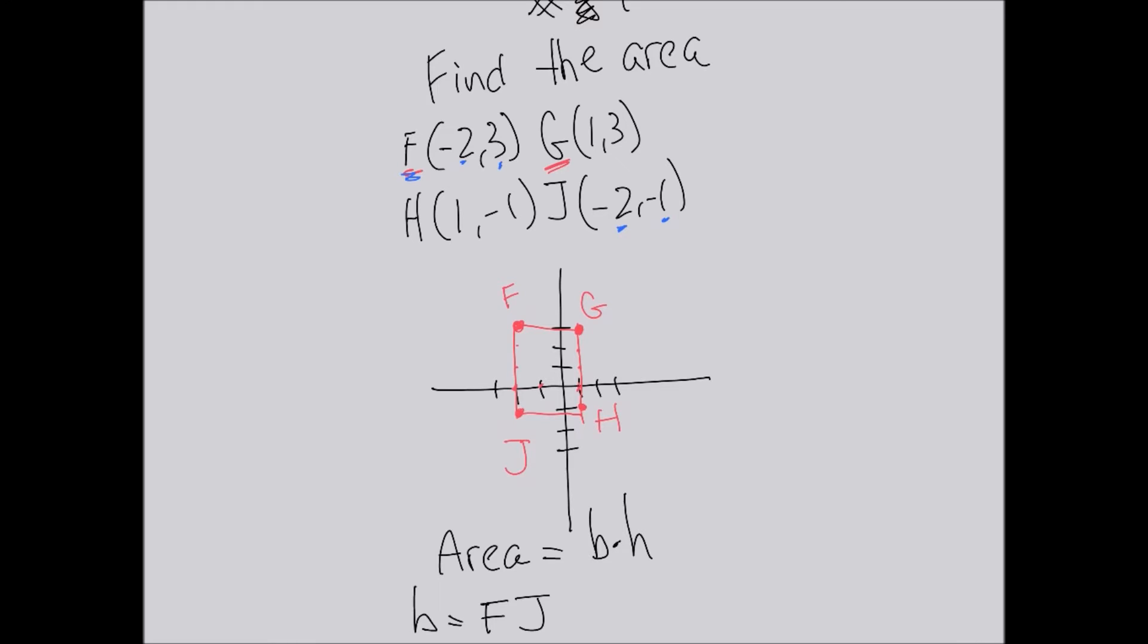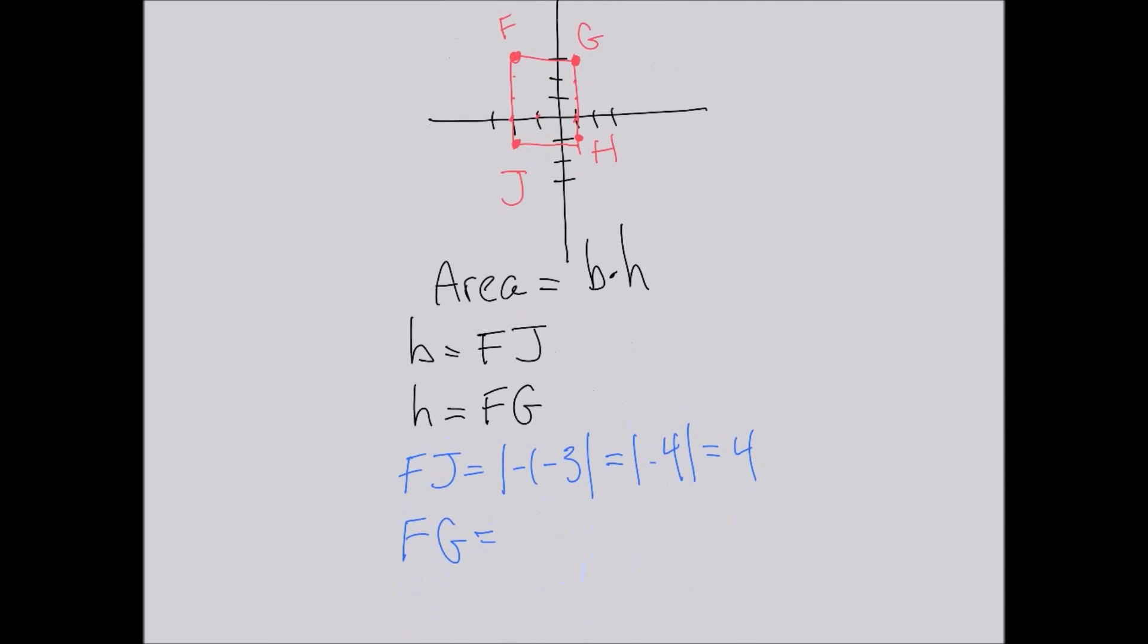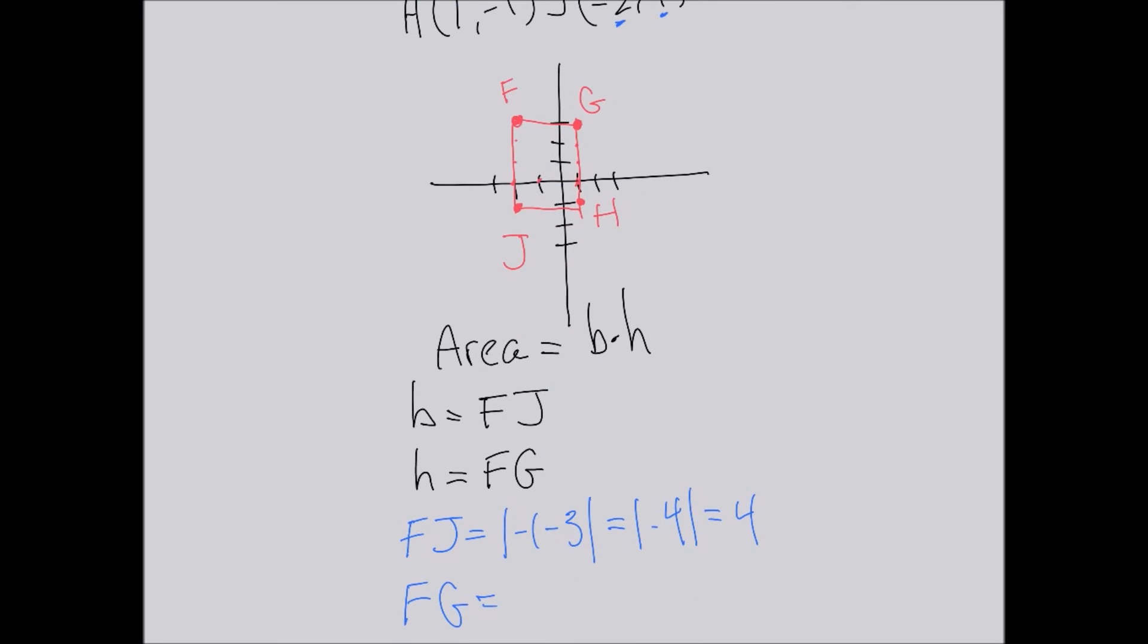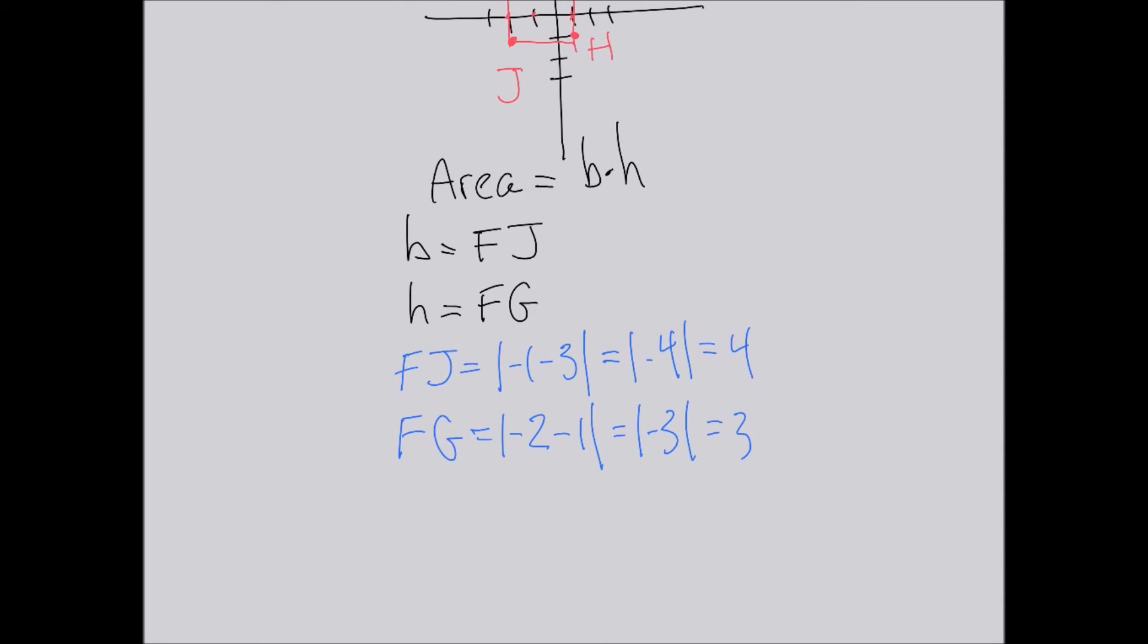difference, the absolute value of the difference between the x-coordinates, because the y-coordinates are the same. In this case, we find that FJ (that's our base) is 4, and FG (that's our height) is 3.